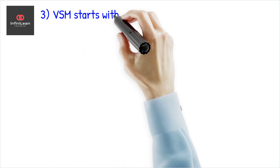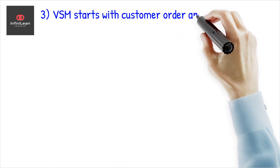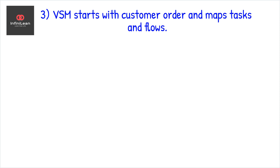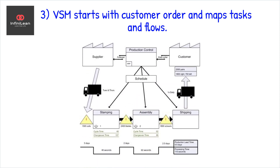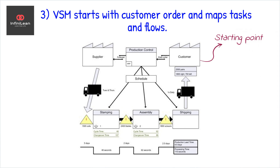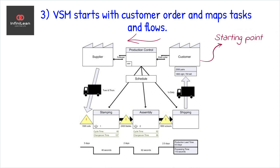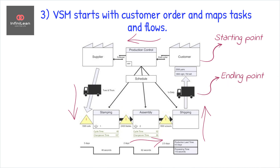In general, VSM starts with a customer order or demand and finishes with delivery to the customer. To map the existing process, use boxes for tasks, arrows to show the flow of materials and information, inventory triangles to show stock and queues, and data boxes for process metrics.